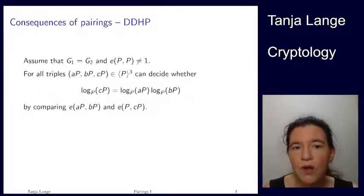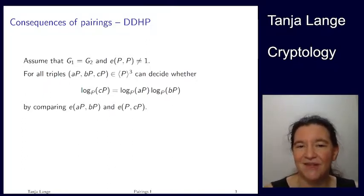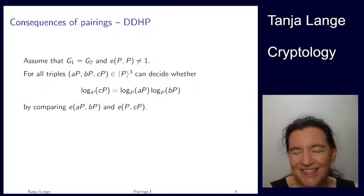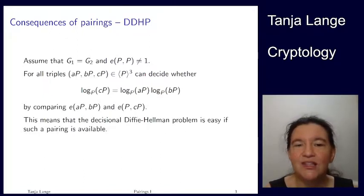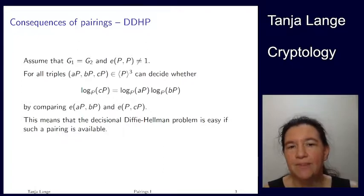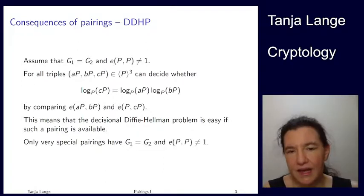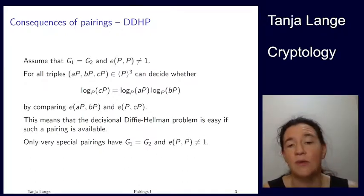Note, this doesn't give us the computation of the problem. We still don't know what ABP is, but we know whether CP is it or not. So if we have such a pairing, then the decisional Diffie-Hellman problem is easy. And it's a very special pairing which has this. We're going to see an example where it does happen.